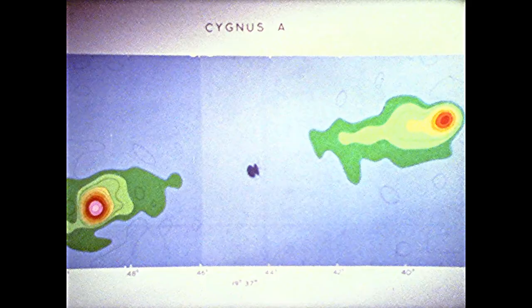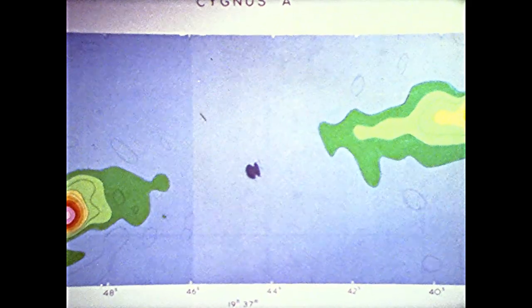This is another such map of the radio galaxy Cygnus A. It shows that powerful radio waves come from two compact regions, each about 200,000 light-years either side of the parent galaxy visible in optical telescopes. The energy associated with this source is equivalent to the total destruction of one million stars, a situation of unimaginable and still unexplained violence.